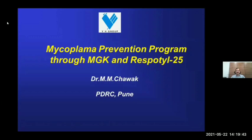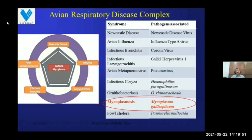Because of rapid and haphazard growth of poultry industry, various disease syndromes are commonly observed, out of which respiratory disease complex is a major syndrome causing heavy economic losses. In avian respiratory disease complex, various pathogens are involved like Newcastle disease, avian influenza, infectious bronchitis, infectious laryngotracheitis, avian metapneumoviruses, infectious coryza, ornithobacteriosis, fowl cholera, and mycoplasmosis.